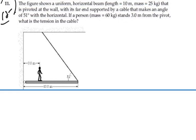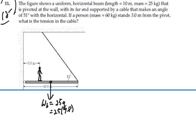First thing we want to do is make a free body diagram of the beam. We know it has weight, and we treat that as acting at its center of mass, right in the center of the beam. That weight of the beam is equal to 25 kilograms times G, which would be 25 times 9.8, which is 245 Newtons.